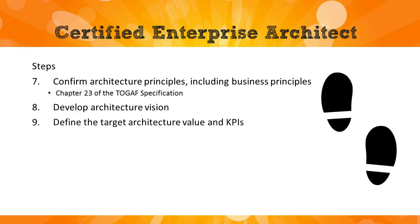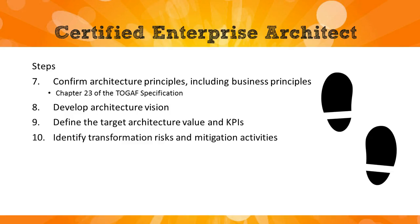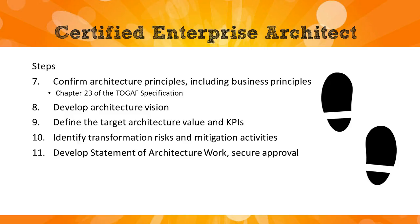The target architecture value: what is your company going to be able to do with this new architecture? What are they going to earn, what are they going to save? Are changes going to be easier and quicker? What are the business values of what you're proposing? Number ten is the transformation risks and mitigation activities. Number eleven is the statement of architecture work — once you've got your vision, you go and sell it, get approval, and go develop it.